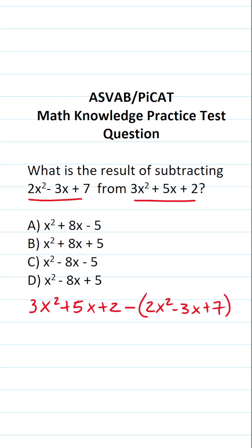The very next thing we have to do is take this subtraction or negative sign and distribute it to each term. So this becomes 3x² + 5x + 2.